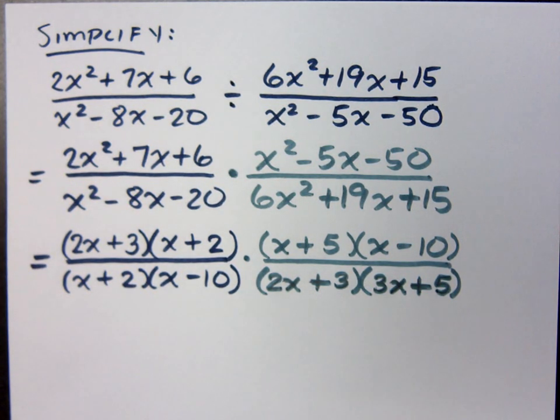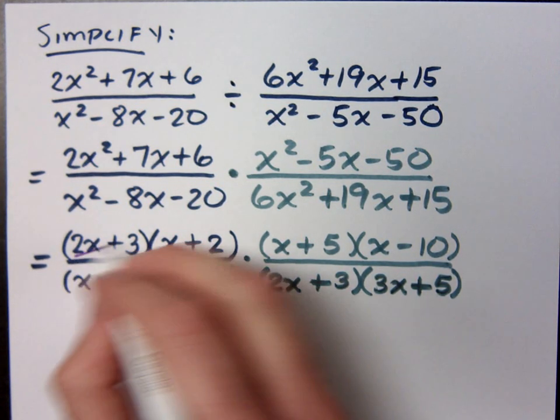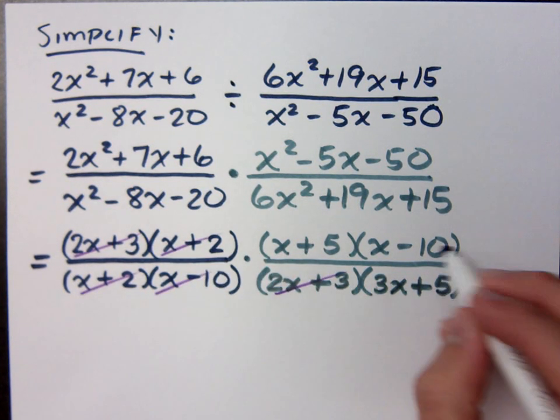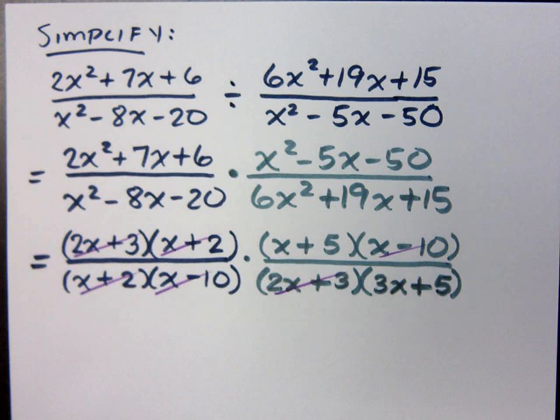Now it's time to bring out the katanas of cancellation. What are the factors that get to simplify? One at the top and one at the bottom. 2x plus 3. 2x plus 3. x plus 2. x minus 10. x plus 2. x minus 10. Anything else? No.